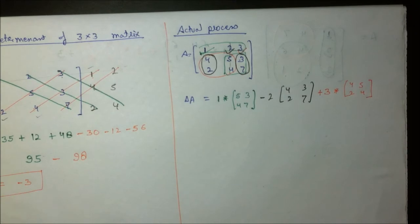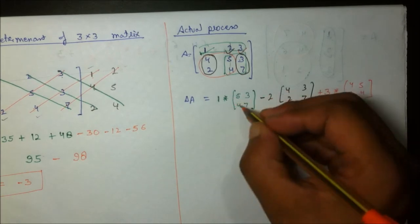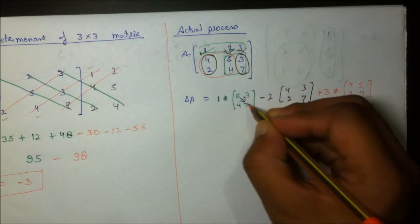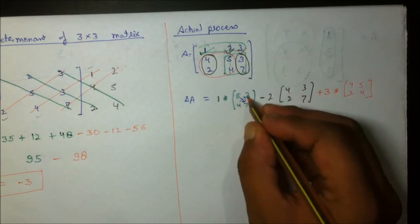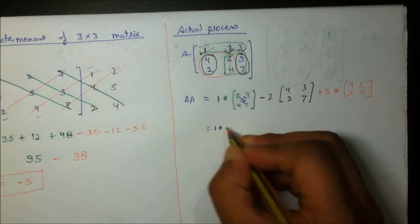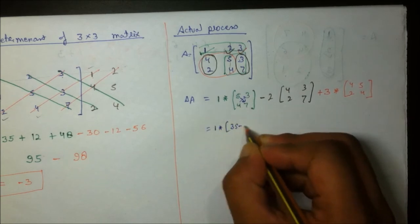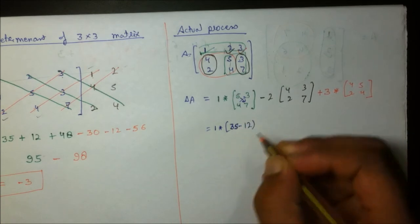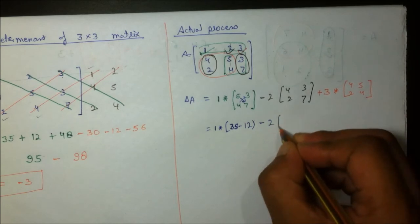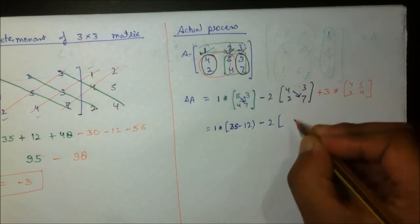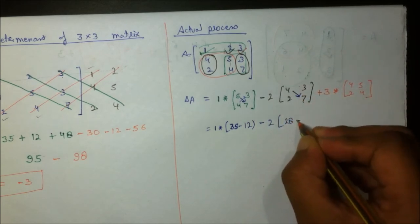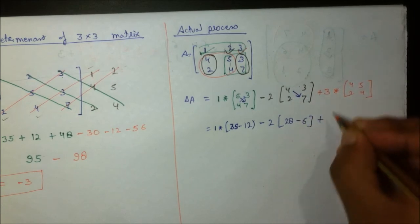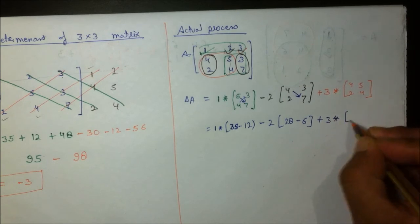Now multiplying and subtracting diagonals of each 2×2 block: 7×5=35 minus 4×3=12, giving 1×(35−12) = 23. Then for the second term: 7×4=28 minus 2×3=6, giving minus 2×(28−6) = minus 44.